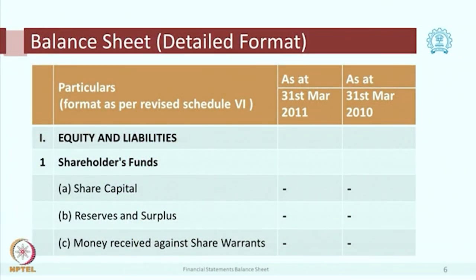Now take a look at item C — money received against share warrants. What is a share warrant? In a partnership firm there are partners with individual capital; but in a company there are thousands of owners, so we write the total amount contributed as share capital. A share refers to the share in the ownership of a particular company. Sometimes a few people are entitled to receive shares in future — as of today they have not yet received shares, so we cannot show it in share capital. That is what a share warrant is.